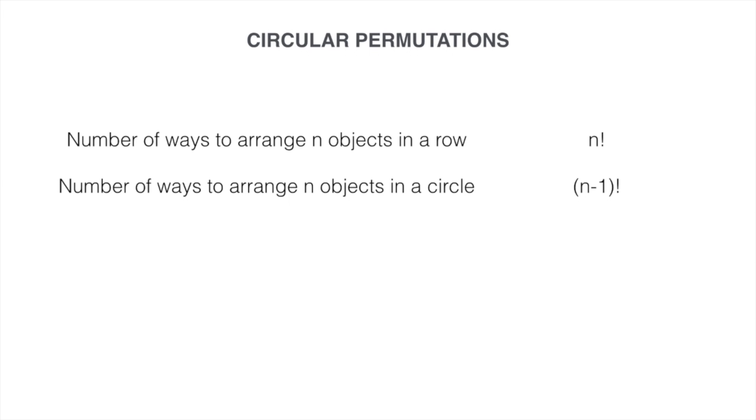Basically, in a circular permutation, one of the objects acts as a pivot and this pivot defines the start and the end position.